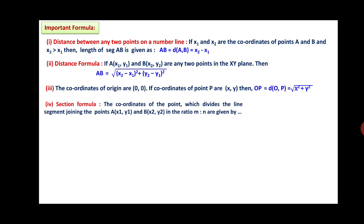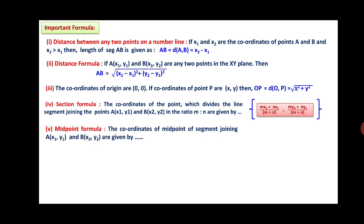Section Formula: the coordinates of the point which divides the line segment joining A(x1, y1) and B(x2, y2) in the ratio m to n are given by: x-coordinate equals (m·x2 + n·x1) divided by (m + n), and y-coordinate equals (m·y2 + n·y1) divided by (m + n). Midpoint Formula: the coordinates of the midpoint of a segment joining A(x1, y1) and B(x2, y2) are x-coordinate equals (x1 + x2) divided by 2 and y-coordinate equals (y1 + y2) divided by 2.